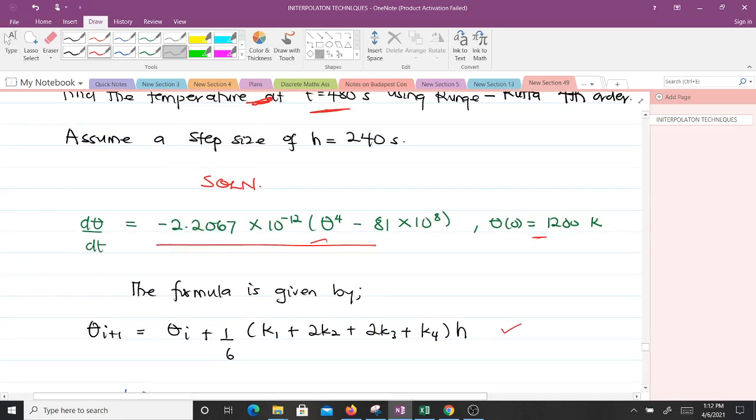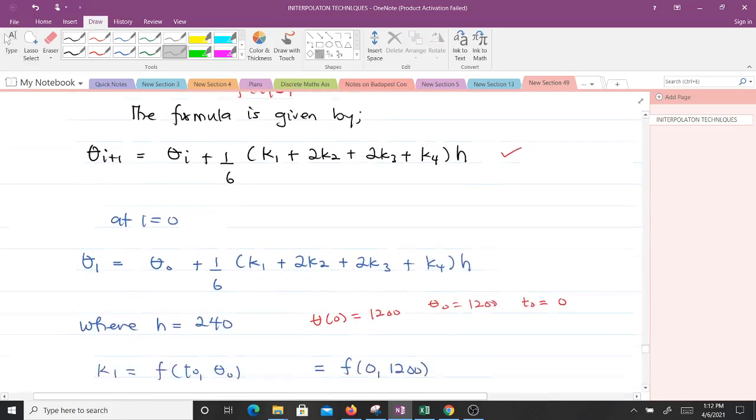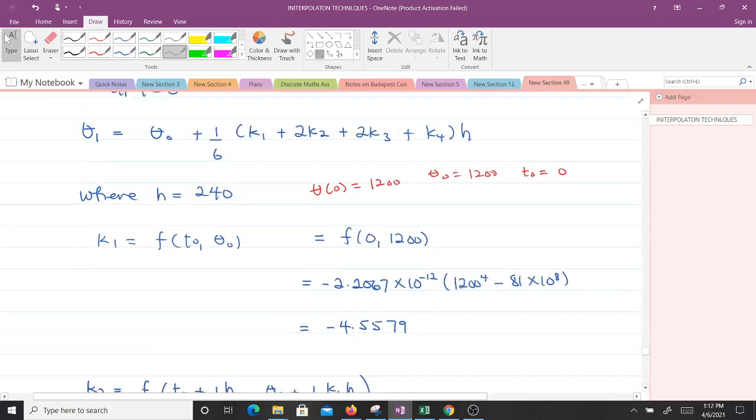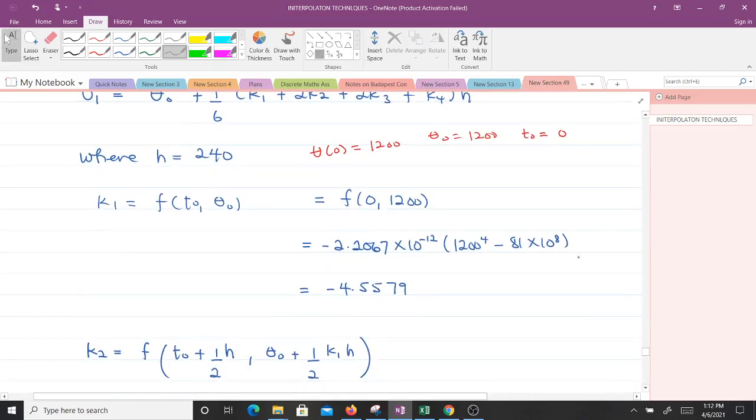The whole of this is our F of T theta. That means wherever we find theta, we put 1200 there. Since we don't have T in there, this is it. And when we evaluate it, we get negative 4.5579.